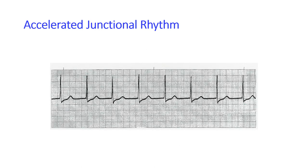An important distinction: accelerated junctional rhythm may be mistaken for atrial fibrillation when P waves are hidden in QRS complexes and the baseline appears nearly flat. However, accelerated junctional rhythm is regular — the R-to-R intervals are regular — whereas atrial fibrillation is irregularly irregular. Do not confuse these two rhythms.